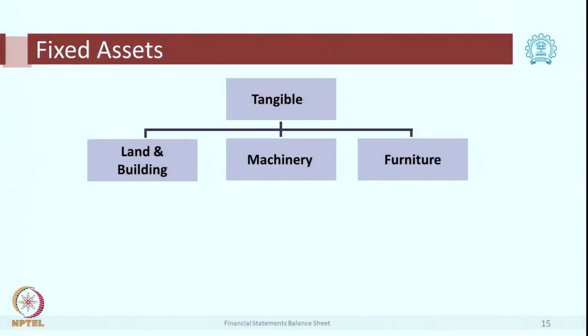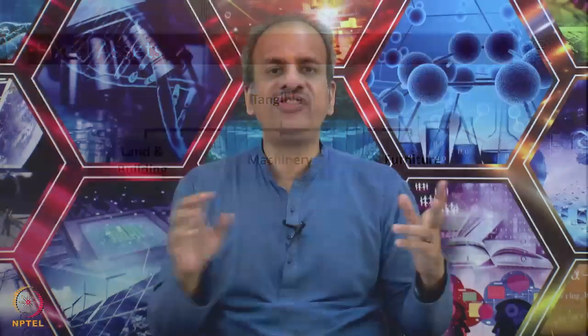We have a large number of computers, cameras, mobile phones — a large number of assets which you can touch and feel are all called as tangible fixed assets. The other type is intangible. This is something which you cannot touch or feel but still has a value. They are going to be with a company for a long time. What are the examples of intangible assets? Can you think of any?